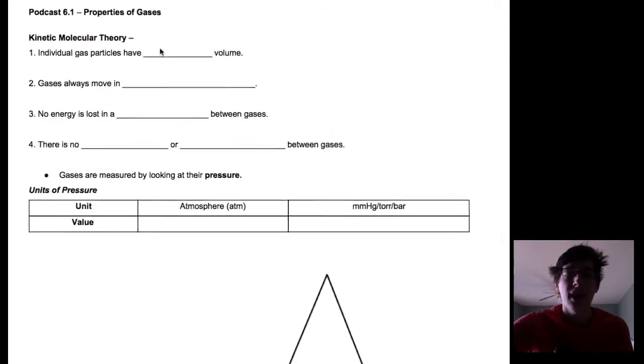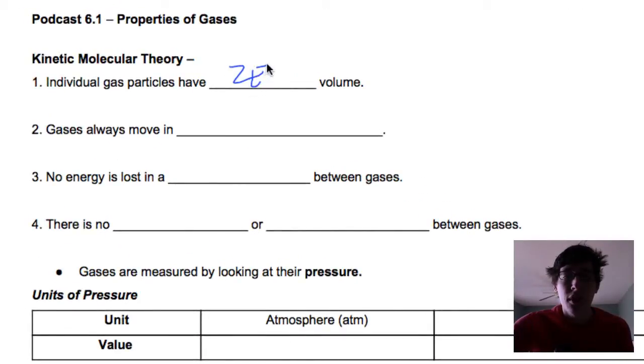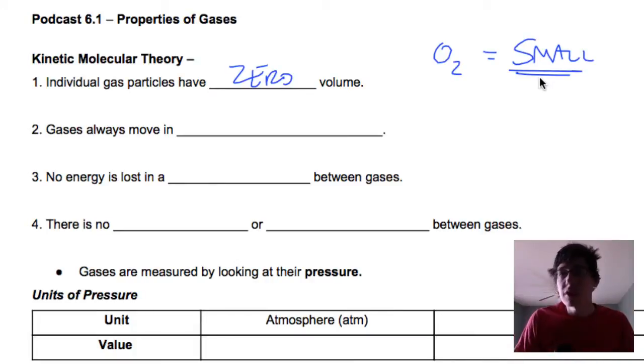The first one says that individual gases have zero volume. When I talk about individual gas particles, I mean one particle of oxygen, O2. O2 is so small, very, very small. It is so small we say it has zero volume. When we have a collection of oxygen, it takes a volume. We know that because we can blow up a balloon. But one individual gas particle has zero volume.